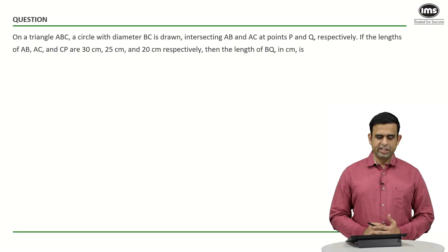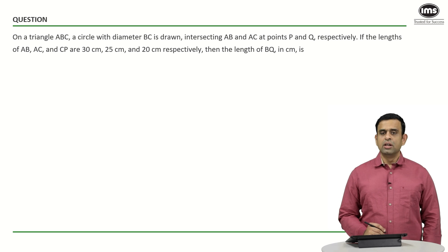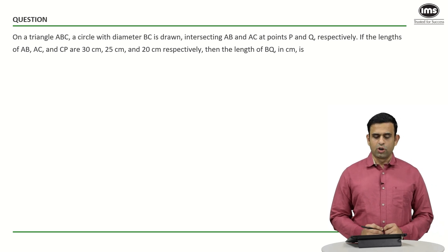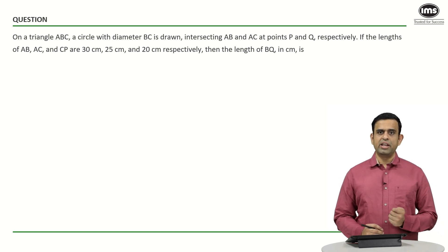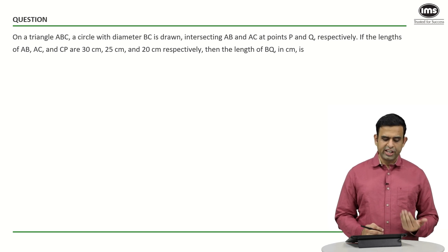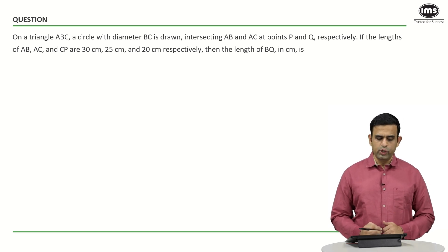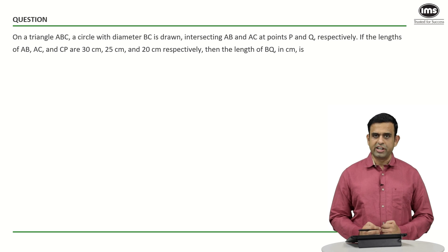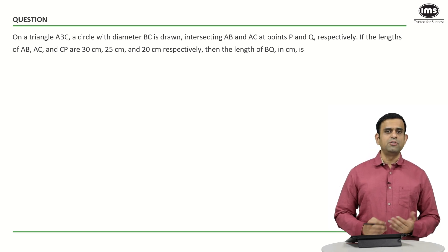In today's question, we have a triangle ABC. A circle with diameter BC is drawn which intersects the side AB and AC at the points P and Q respectively. If the lengths of AB, AC, and CP are given to you as 30, 25, and 20 centimeters respectively, the objective is to find out the length of BQ.